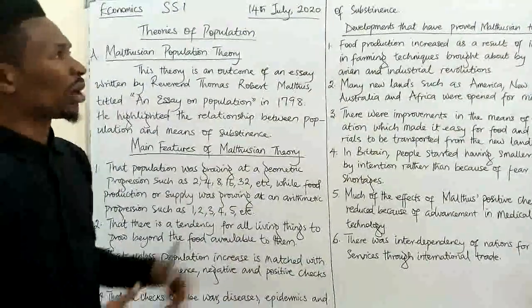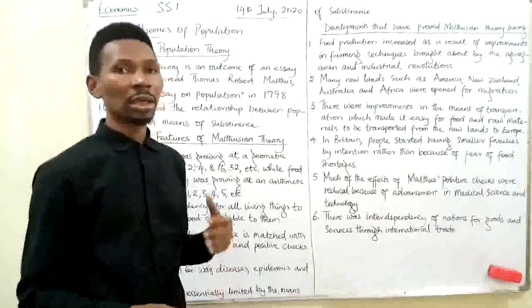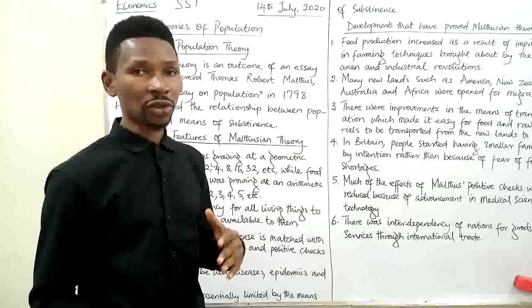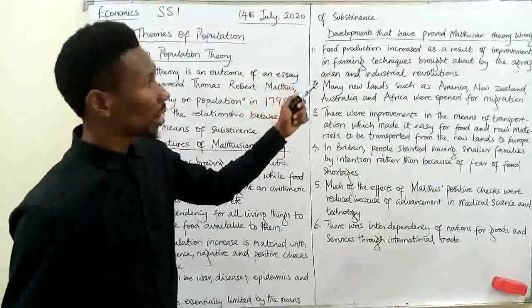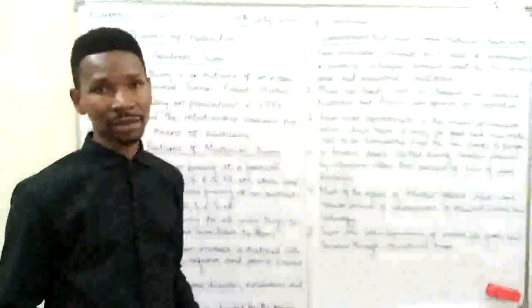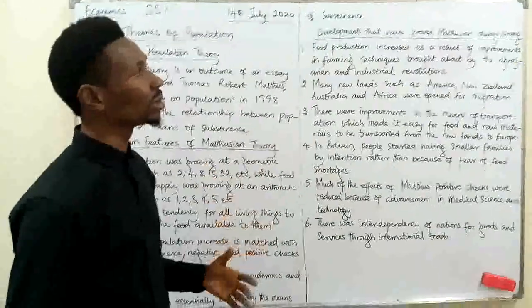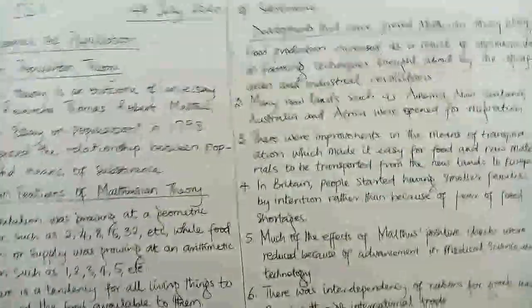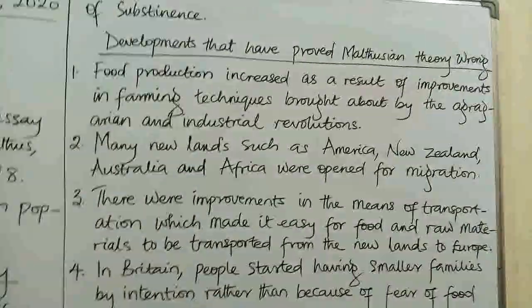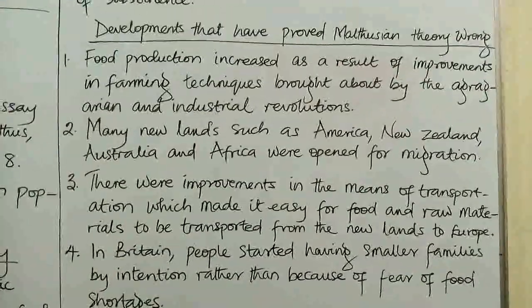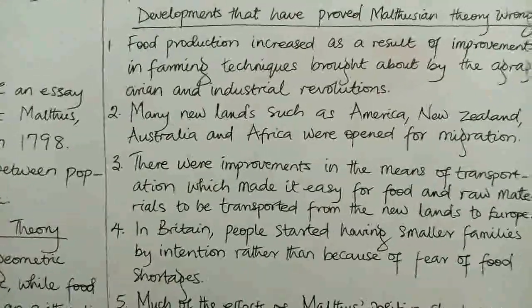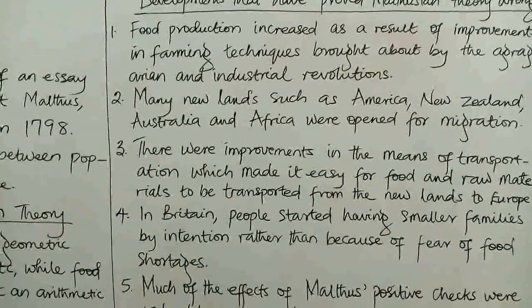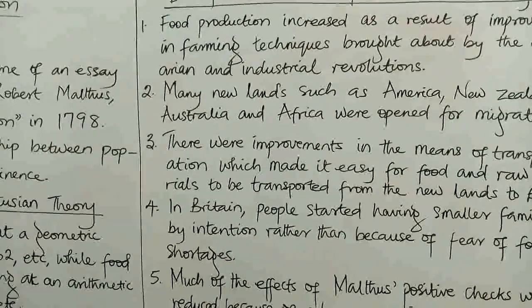Now we are going to look at things that have proven these theories of Malthus to be right and wrong. We will start with the wrong sides — developments that have proven Malthusian theory to be wrong. If you look at the first one on the board, food production increased as a result of improvements in farming techniques brought about by the agrarian and industrial revolutions.